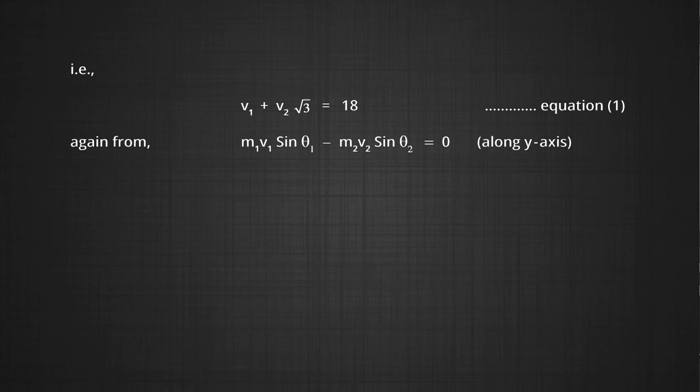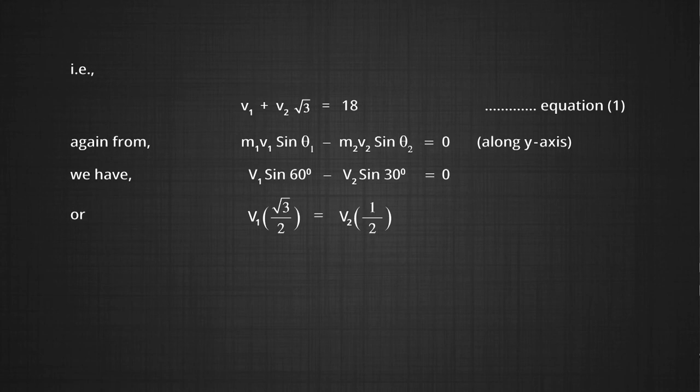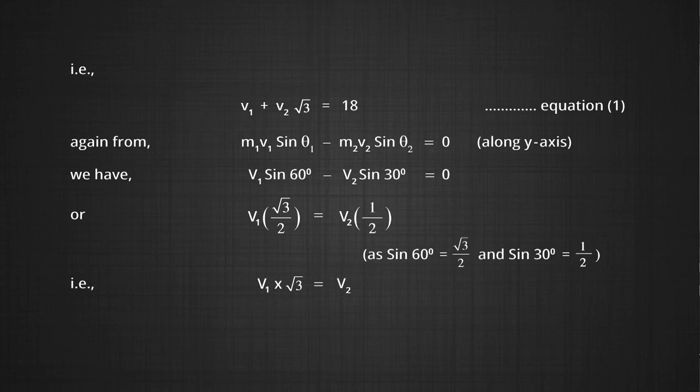From M1·V1·sin θ₁ − M2·V2·sin θ₂ = 0, we get V1·sin 60° = V2·sin 30°. Substituting: V1·(√3/2) = V2·(1/2), so V1·√3 = V2, or V1 = V2/√3. Let this be Equation 2.